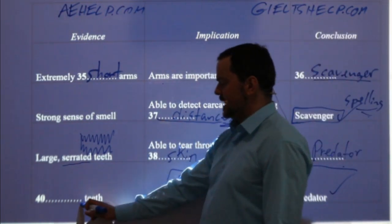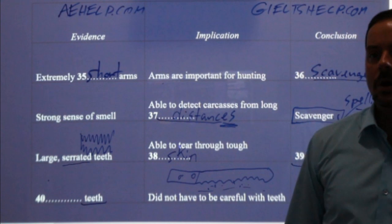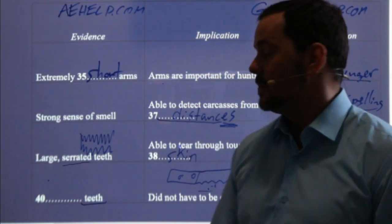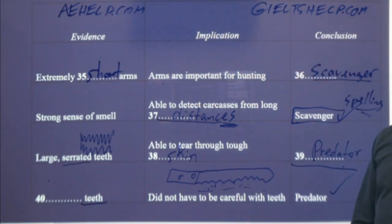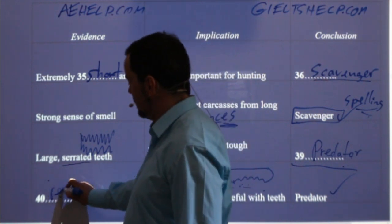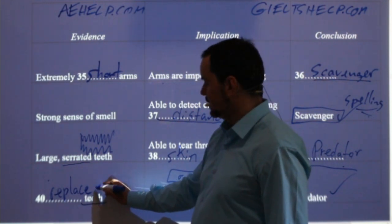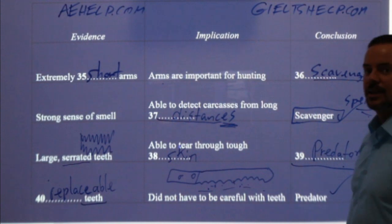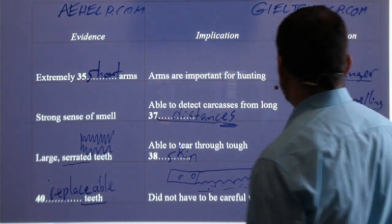Number 40 — this was an interesting one. It's a noun: teeth. And this is an adjective. What was the adjective? What kind of teeth did it have? Replaceable. The teeth fall out — no problem, just like my little baby girl with her baby teeth. They're replaceable. New ones will grow in. Unlike humans, who grow only two sets in a lifetime, T-Rex's teeth could be replaced over and over. At least once — for humans. So those were the answers.